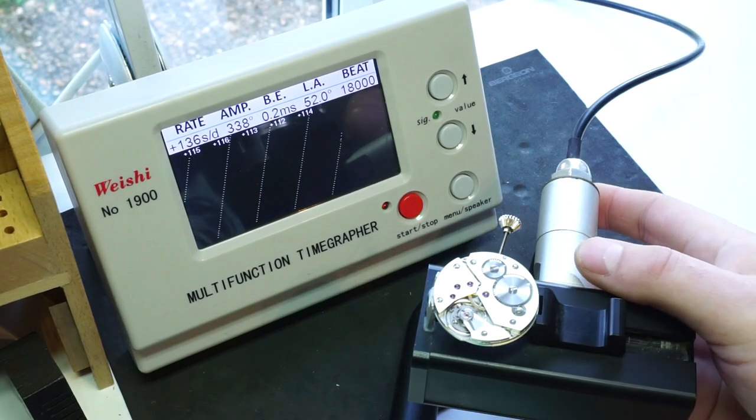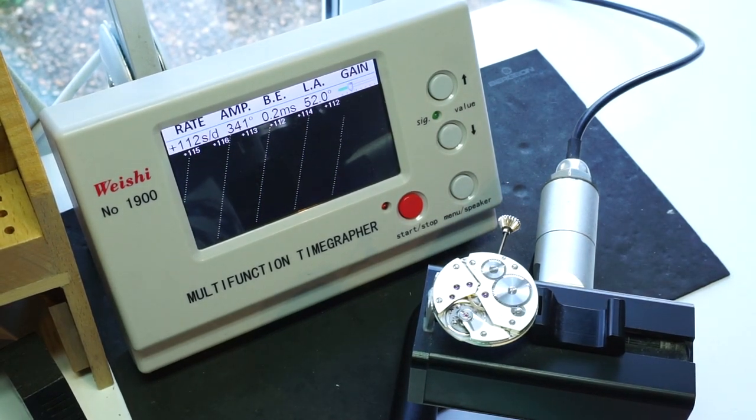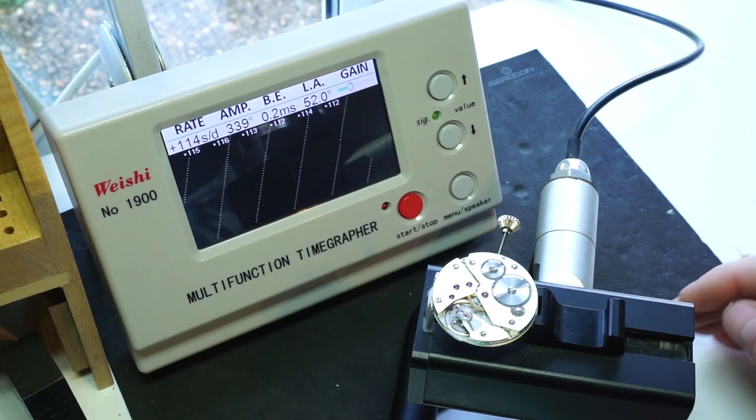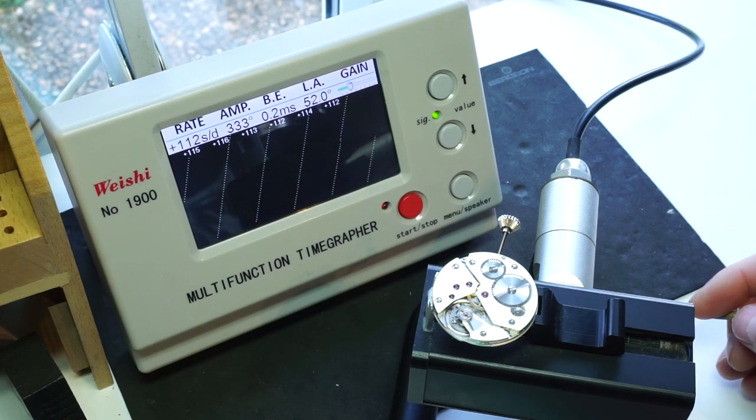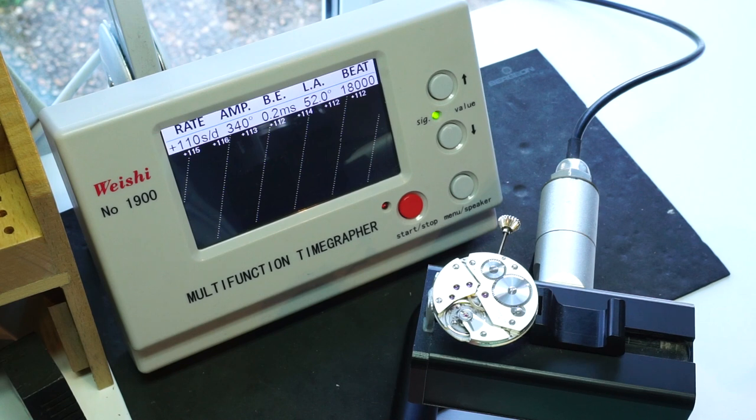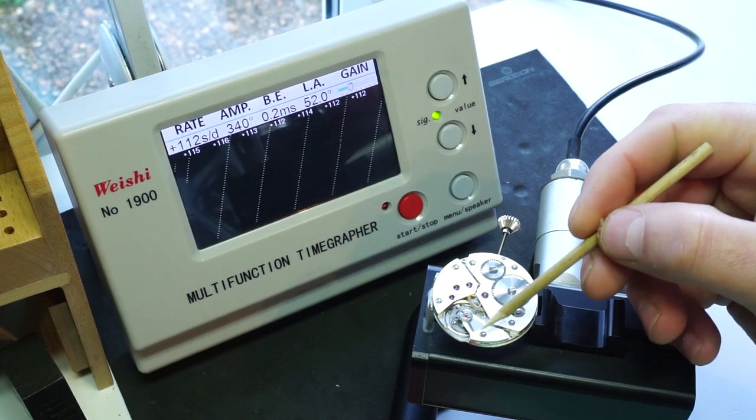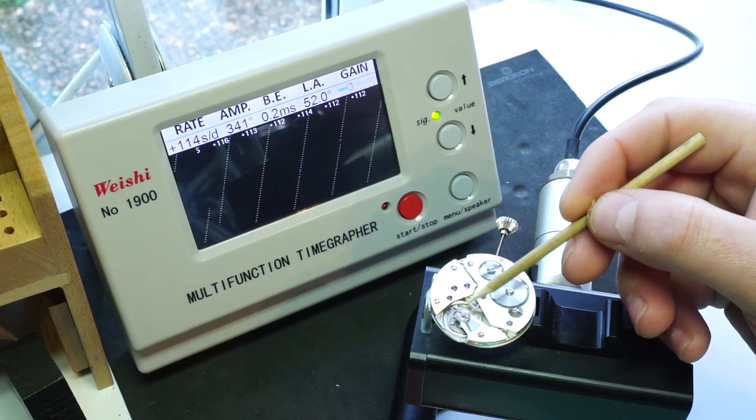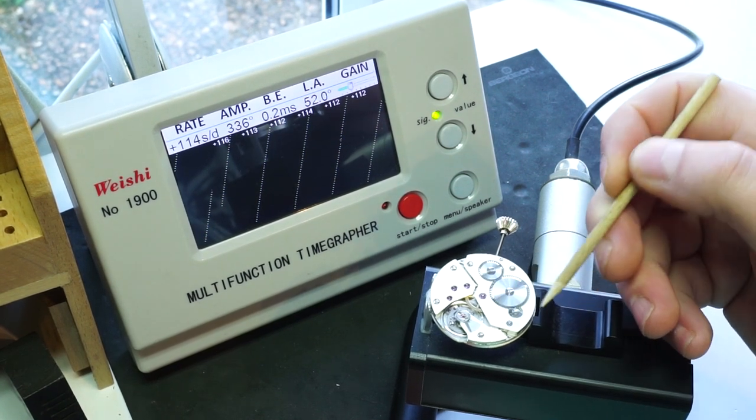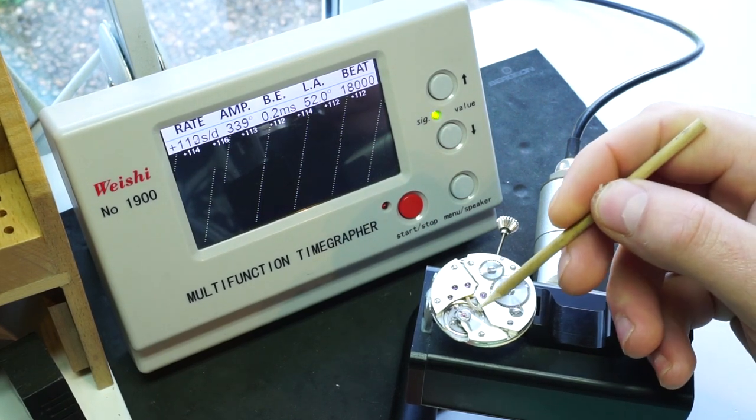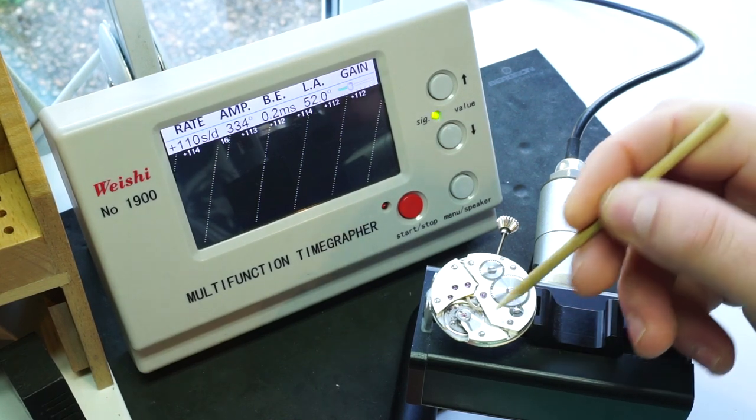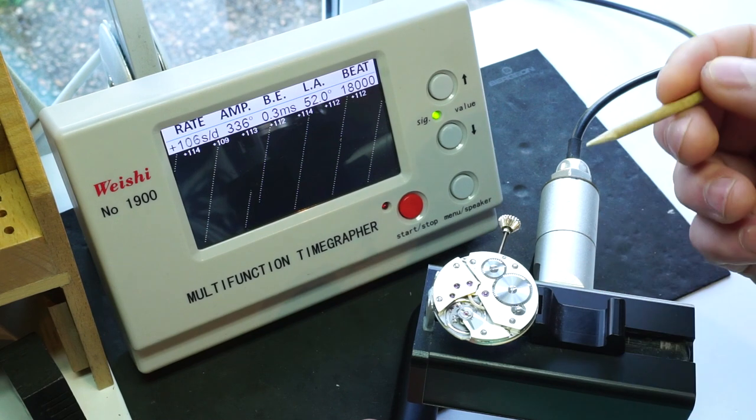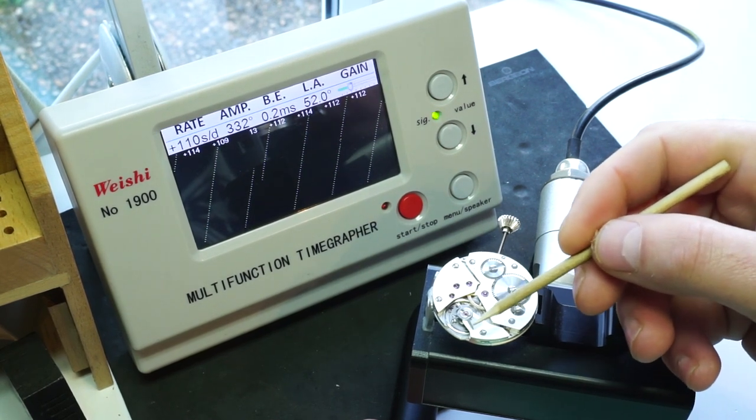We're going to adjust the regulator on the movement so the timing is improved, because 112 seconds a day is far away from where we want it to be. We want to get it down to maybe minus 10 to plus 10 kind of area. This part here on the balance cock, this is the regulator. This controls the rate of the movement. If we push the regulator in one direction, it will shorten the spring of the balance and increase the rate. If we draw the regulator to the other side, that will lengthen the spring on the balance and reduce the rate, making the watch run slower. It's nearly fully on the left hand side, so the rate is gaining quite a lot.